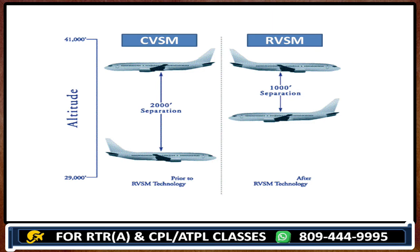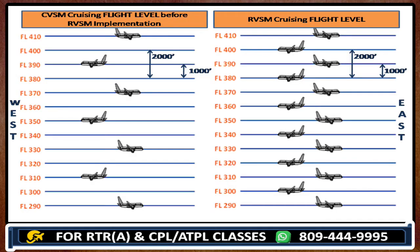We no longer follow Conventional Vertical Separation Minimum, because with CVSM we had a limited number of flight levels since we needed to give a separation of 2000 feet. In the opposite direction it was 2000 feet, and in the same direction we needed to give a separation of 4000 feet. Now we are giving separation of just half of what we were giving earlier — that is why we call it Reduced Vertical Separation.